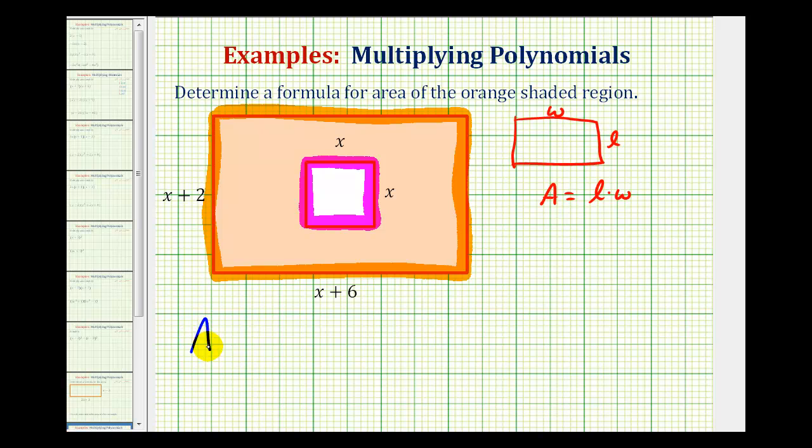So for the area of the shaded region, we'll first start by determining the area of the large orange rectangle, including the square. So we'd have the quantity x plus six times the quantity x plus two, but then we would subtract the area of the square, where the area of the square would be x times x.